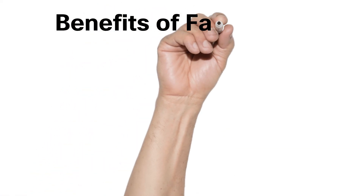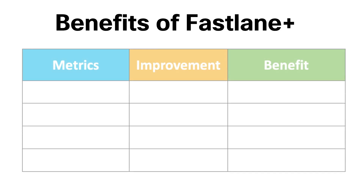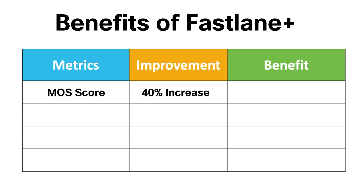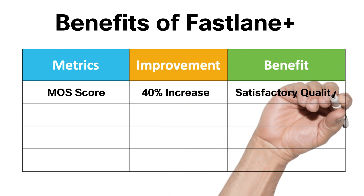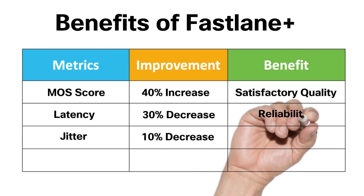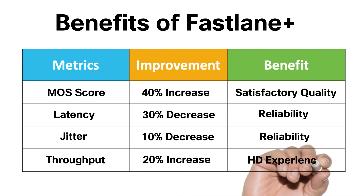To summarize, in an ideal scenario where Fastlane Plus is enabled on a network where the channel utilization is between 70% to 85%, we can observe the following: First, a MOS score increase of around 40%, transforming the audio and video quality from a dissatisfactory score to one of satisfaction. Second, a latency decrease of 30% and a jitter decrease of 10%, further optimizing audio and video quality and reliability. Lastly, a throughput increase of 20%, allowing users to stream video content in higher definition, improving the end-to-end user experience.